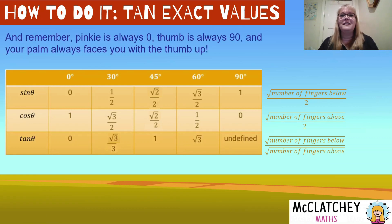Well, I hope you found this helpful. Just always remember, pinky, always zero, thumb, always 90, palm facing towards you with your thumb up. Remember, that makes 90 degrees. That's an easy way to remember that that's 90 degrees. Keep your hand in that same position for all three rules and you've got it all memorized.